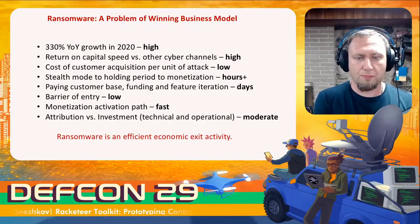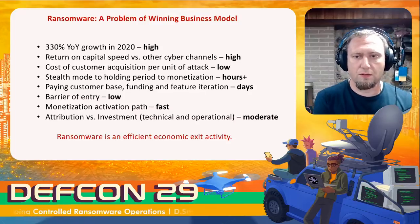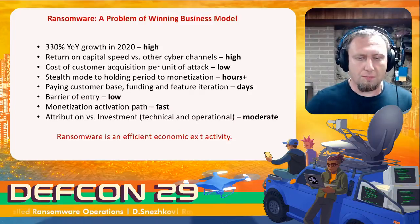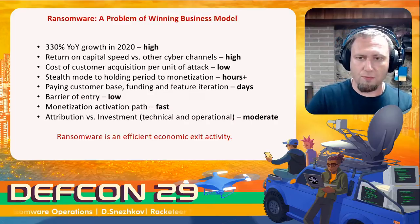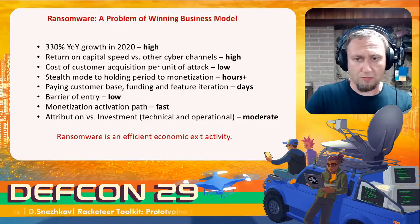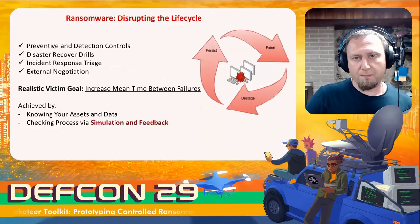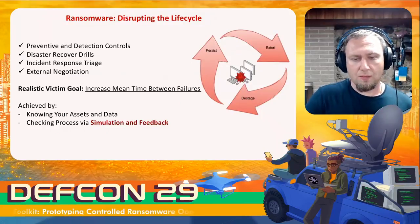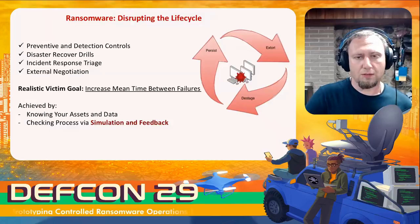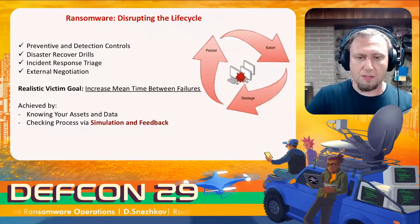The cost of deploying ransomware is much smaller than many other cyber offensives. With the use of crypto, the monetization activation path is fast, and attribution is getting much more fragmented than before. With such a business model, it's no wonder that ransomware has grown about 330% year over year. So if it's such a good business model, how do we emulate the testing for it, inject into it, and make sure we can trace what's going on, understand its capabilities, and react to it?